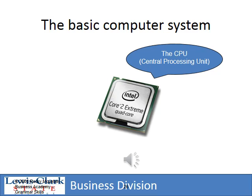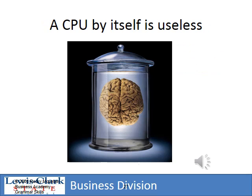We're now going to go over the basic elements of a computer system. The most basic and important component is the central processing unit, the CPU. The CPU does all the processing, all the calculations, all the math — a computer cannot function without a CPU. But the CPU by itself is kind of worthless, like a brain in a jar. A brain in a jar doesn't do very much; you have to connect it to other things. We're going to connect other parts of our computer to the CPU to make it functional.